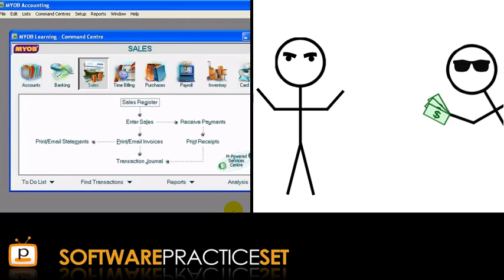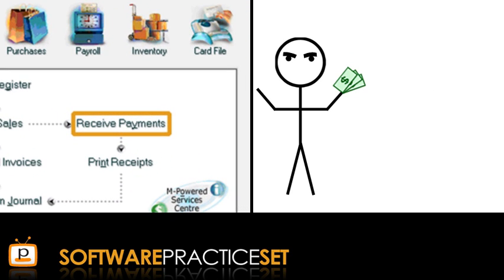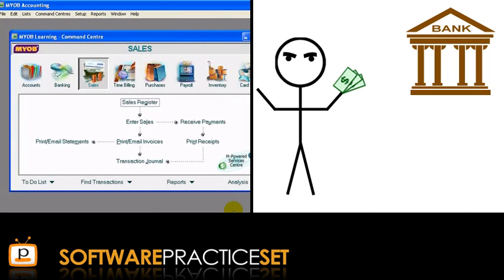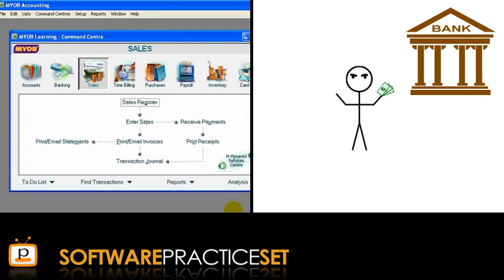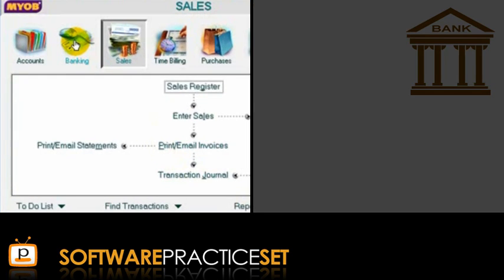When Joe finally pays Chris for the boxes of the good stuff, Chris needs to record the receipt of cash. This is done using the Receive Payments icon. Next, Chris needs to take the cash and deposit it into the bank. This is recorded in the Banking Command Centre, so we won't be covering that step in this tutorial.